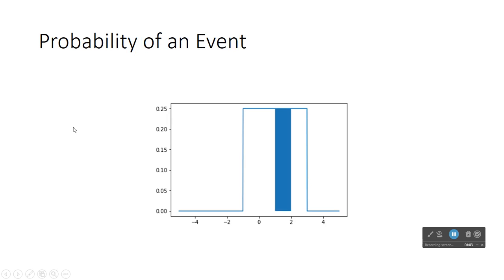Now, the probability of an event is going to be the area under this PDF between the endpoints of the event. So let's take a look at this.